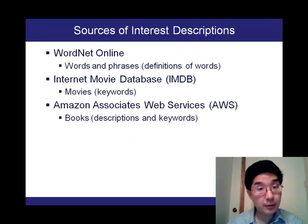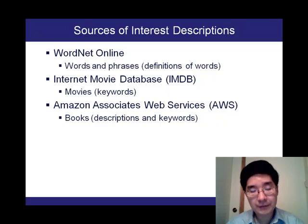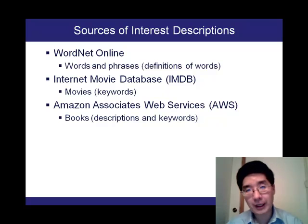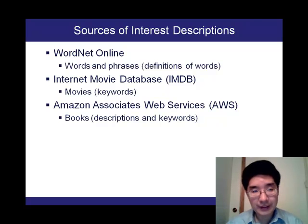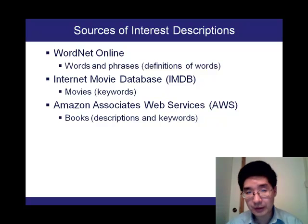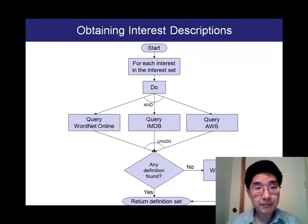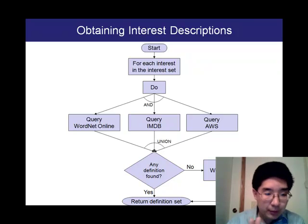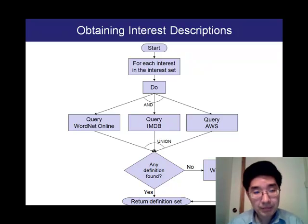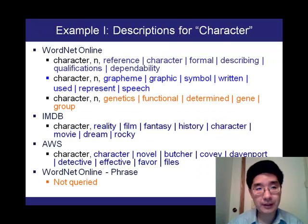What we'd like to do is group these interests into a hierarchy by clustering interests based on their definitions or descriptions. For that purpose, I've identified four sources of information. The first is WordNet Online, an online dictionary of words and phrases very commonly used in building ontologies. Other sources are the Internet Movie Database, where movies have keywords representing the genre of each film, and the Amazon Associates Web Service, where books also have genre descriptions and keywords. In addition, we have the WordNet Online Phrase Dictionary. For every interest in the dataset, we first query WordNet Online, IMDB, and AWS to see if any definition is found; if not, we go to the WordNet Online Phrase Dictionary.